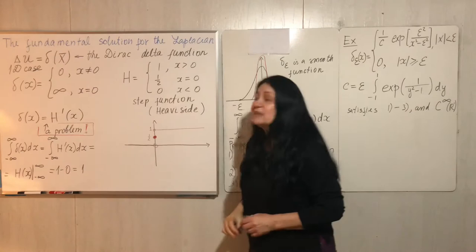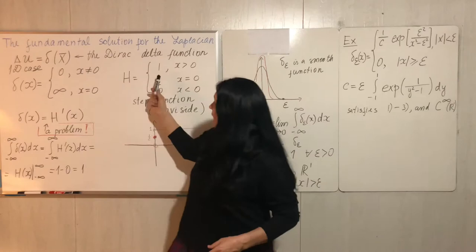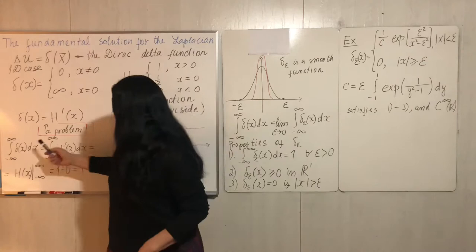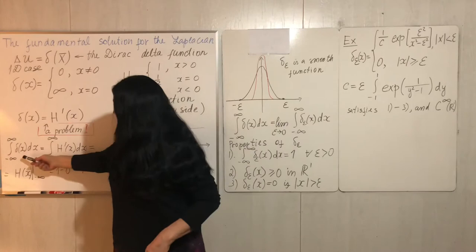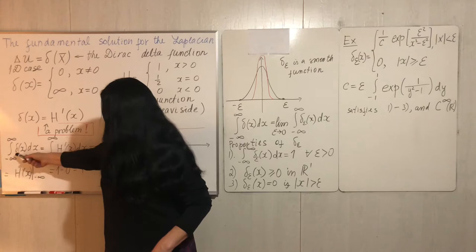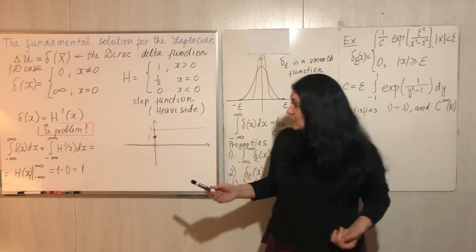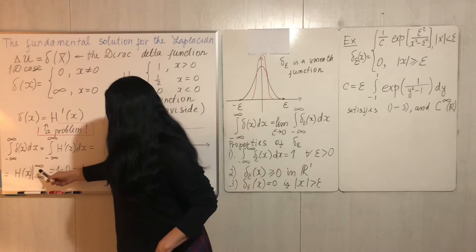So he defined his function like this, and he wrote that delta of x is the derivative of the Heaviside function. But this created a huge problem for orthodox mathematicians. If we start to integrate the delta function, having in mind that it is the derivative of the Heaviside function, we can write the integral along the x-axis of delta(x) dx, replace delta(x) with H prime, and then use the fundamental theorem of calculus.